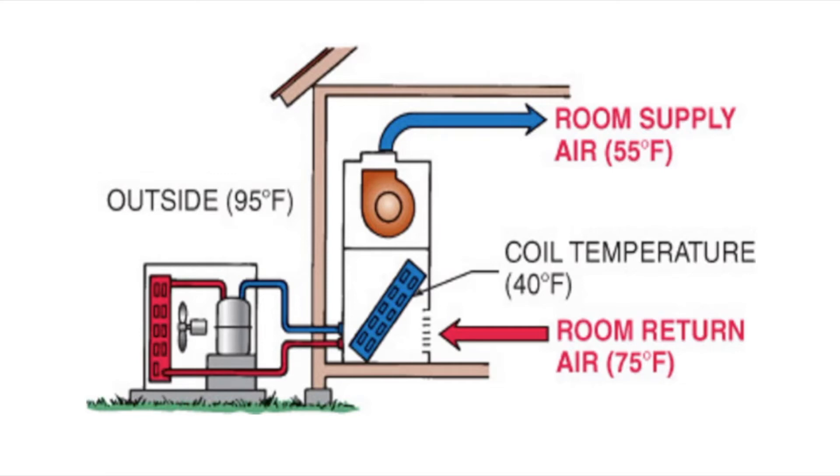We have the difference between 75 and 55, that's 20 degrees. Some people call that delta T temperature difference. So now we see that we have 20 degrees of temperature difference between the air coming in and the air going out. Ideally that's what you want. Ideally, that's the temperature difference you want between the air coming in and the air going out with a 40 degree coil.